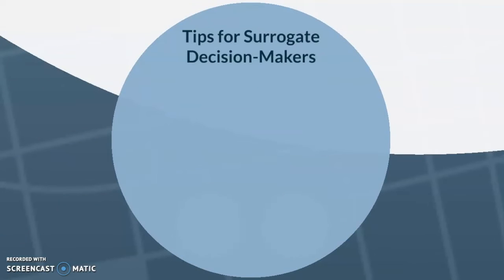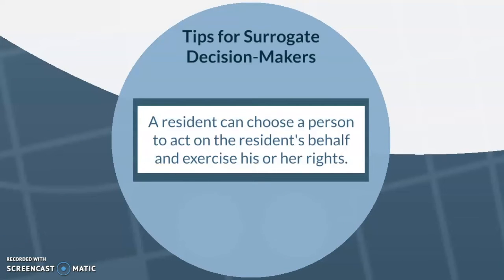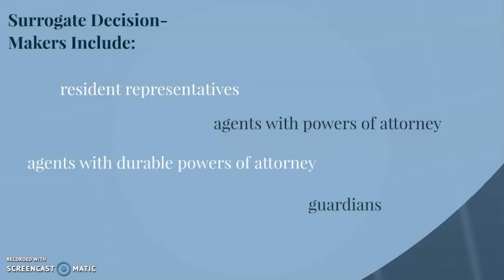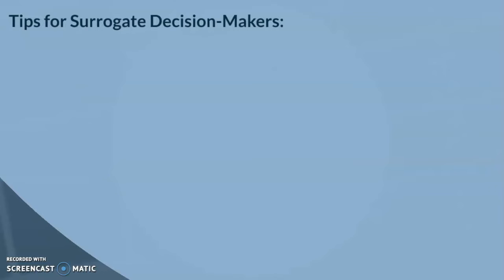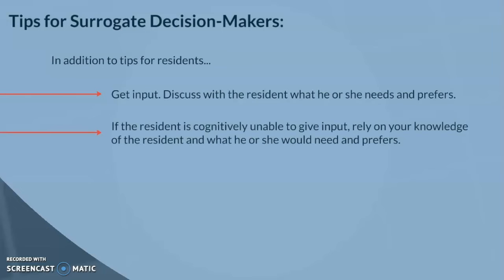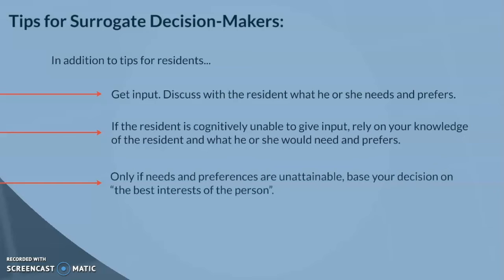Tips for surrogate decision makers: a resident may choose a person to act on their behalf and exercise their rights. When helping a resident as a surrogate decision maker, be sure to get input from the resident and discuss what he or she needs and prefers. If the resident is cognitively unable to give input, rely on your knowledge of the resident and what he or she would prefer. Only if needs are unattainable should you base your decisions on the best interests of the person.